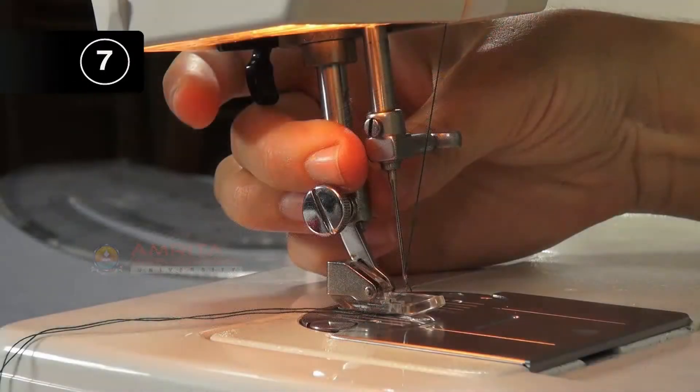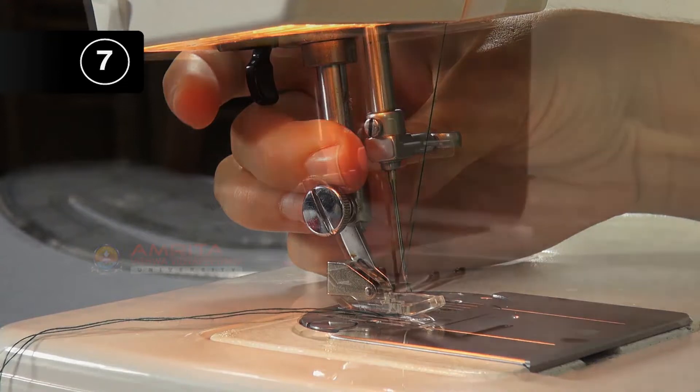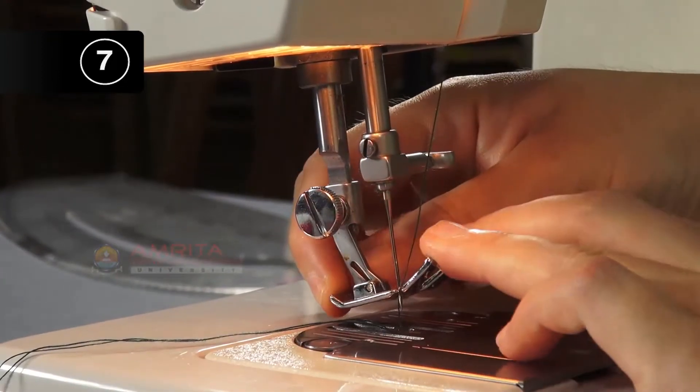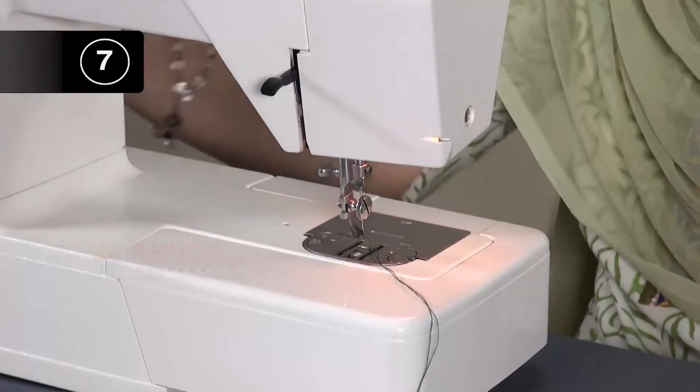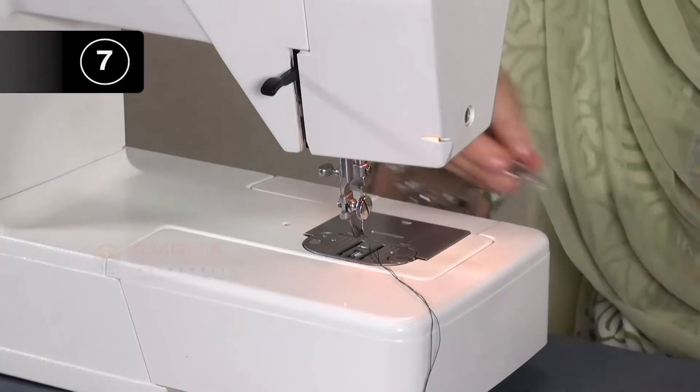Step 7: Install the zipper foot into the right groove. Remove the regular foot from the machine and instead install the zipper foot into the right groove.